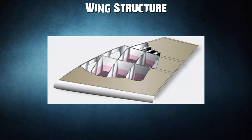In box beam construction, a corrugated sheet may be placed between the bulkheads and the smooth outer skin so that the wing can better carry tension and compression loads. In some cases, heavy longitudinal stiffeners are substituted for the corrugated sheets. A combination of corrugated sheets on the upper surface and stiffeners on the lower surface is sometimes used. Air transport category aircraft often utilize box beam wing construction.